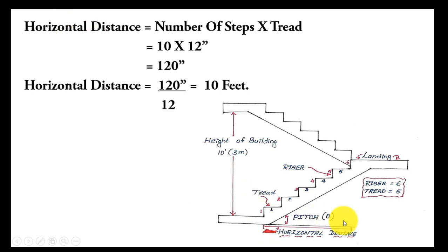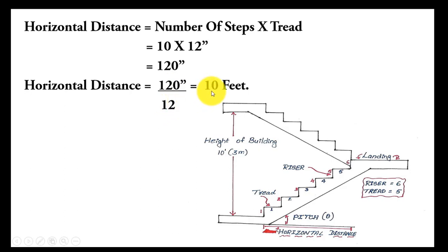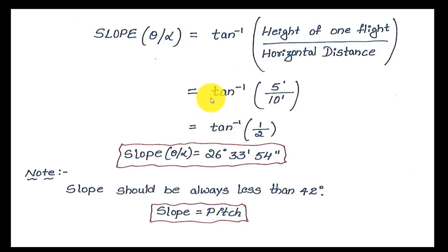Now we find the horizontal distance. Horizontal distance equals the number of steps multiplied by the tread dimension. For one flight there are 10 steps; the tread is 12 inches. So 10 multiplied by 12 equals 120 inches. Converting to feet: 120 divided by 12 equals 10 feet. The horizontal distance is 10 feet.